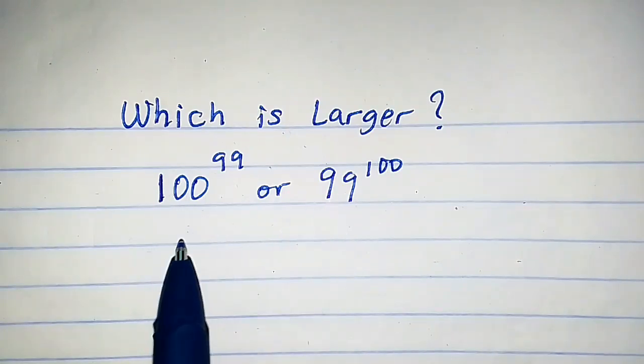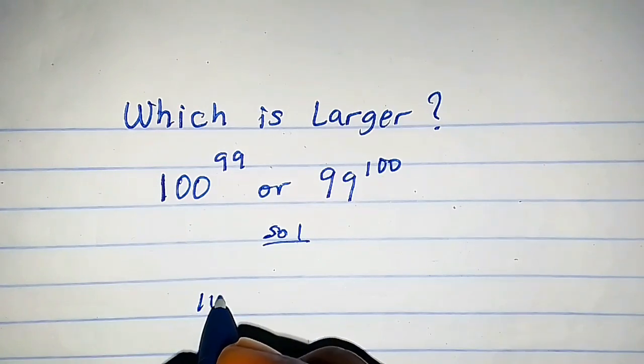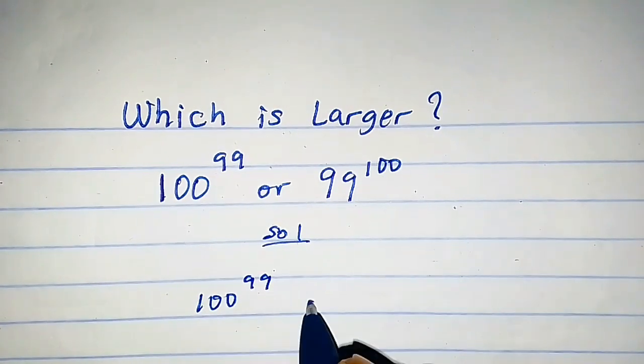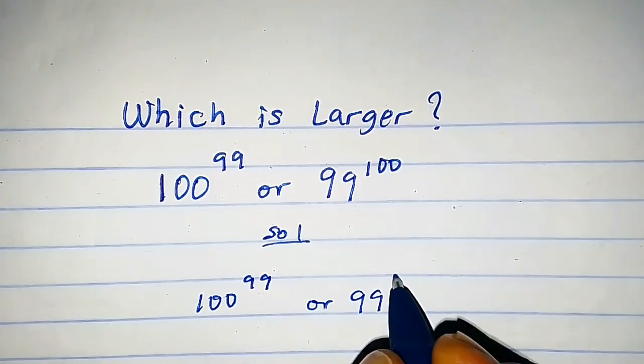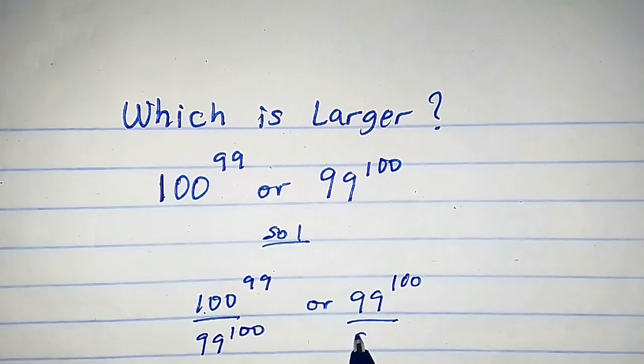Which number is larger between these two: 100^99 or 99^100? To solve this, let's divide both sides by 99^100.